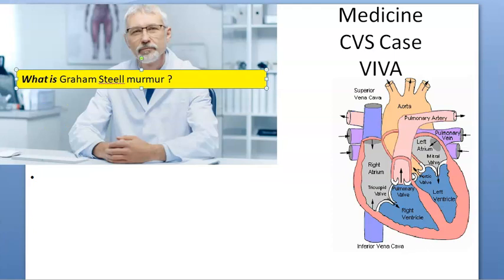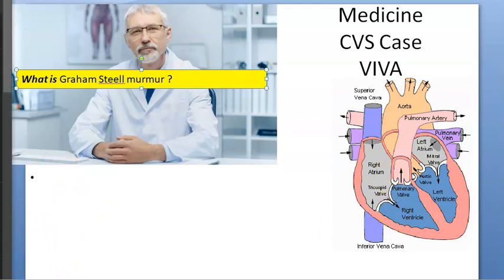What is Graham Steell murmur? Graham Steell murmur we will see in pulmonary valve incompetence — that is pulmonary regurgitation. The murmur is heard over the pulmonary valve area.